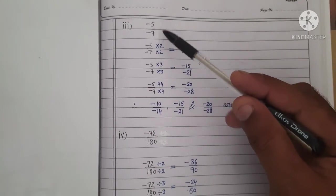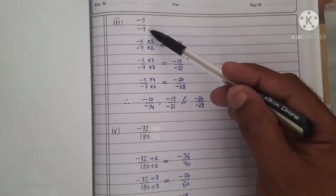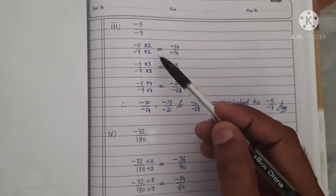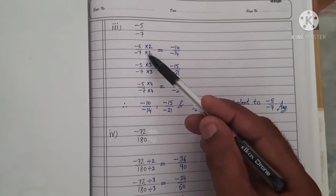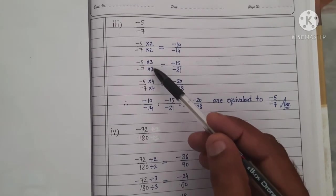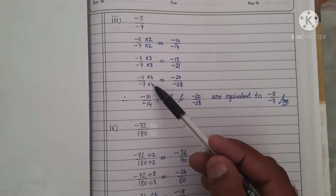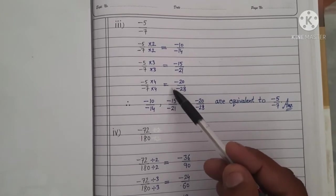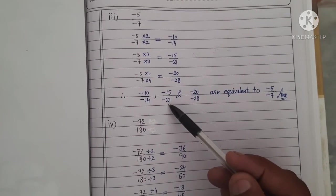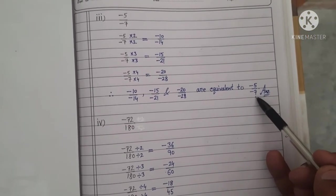Part 3: minus 5 upon minus 7. Yahan par rational number reduce into lowest form given hai — iska matlab hum yahan par by multiplication 3 equivalent rational numbers find karenge, kyunki iske numerator aur denominator dono kisi ki table par cut nahi hote. First equivalent: numerator aur denominator dono ko 2 se multiply karenge — minus 10 upon minus 14. Second: 3 se multiply karenge — minus 15 upon minus 21. Third: 4 se multiply karenge — minus 20 upon minus 28. Therefore, minus 10 upon minus 14, minus 15 upon minus 21, and minus 20 upon minus 28 are equivalent to minus 5 upon minus 7. That is our answer.